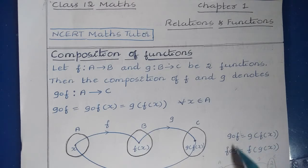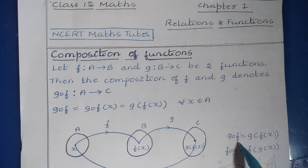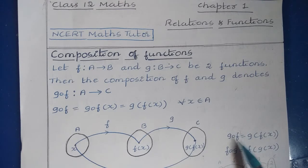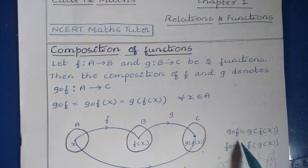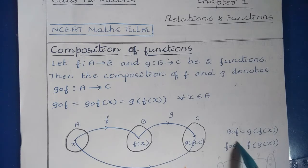Note that gof and fog are entirely different — gof is not equal to fog. In gof, the input goes into f first, then g is applied. In fog, the input goes into g first, then f is applied. That is the key difference between gof and fog.